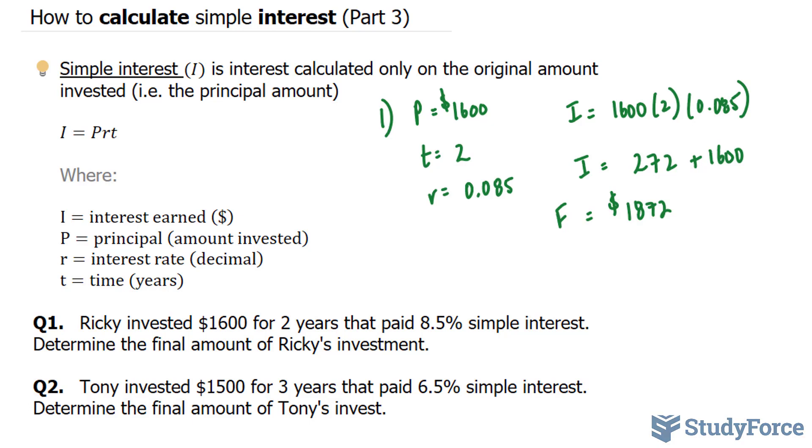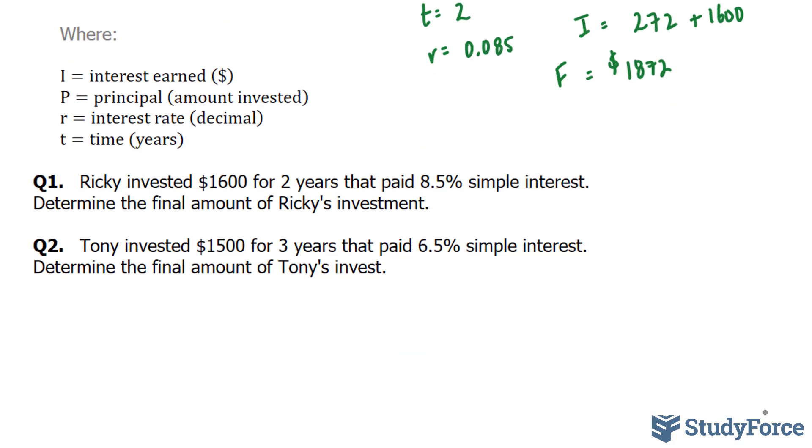Let's move on to question two. That wasn't so bad. In question two, Tony invests $1,500 this time for three years. That paid 6.5% interest. Determine the final amount.